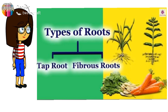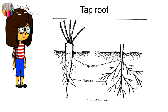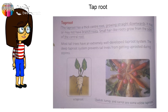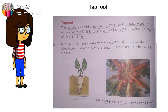Roots are divided into two types: tap root and fibrous root. The tap root has a thick central root growing straight downwards. It may or may not have branch roots. Small hair-like roots grow from the sides of the central root. Most tall trees have an extremely well-developed tap root system.